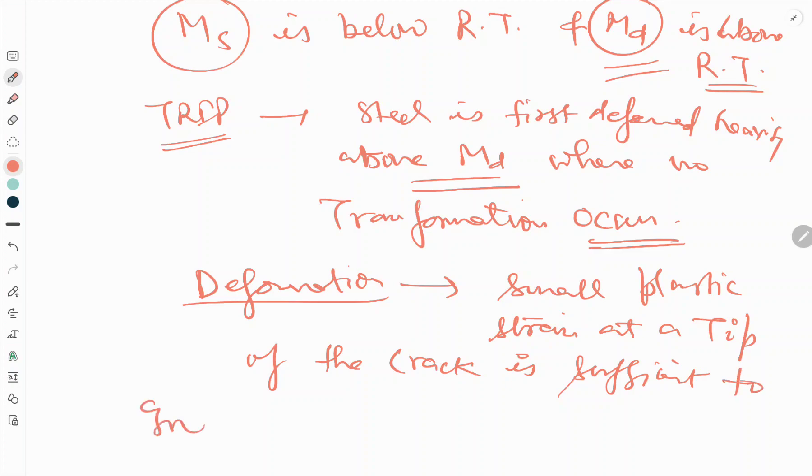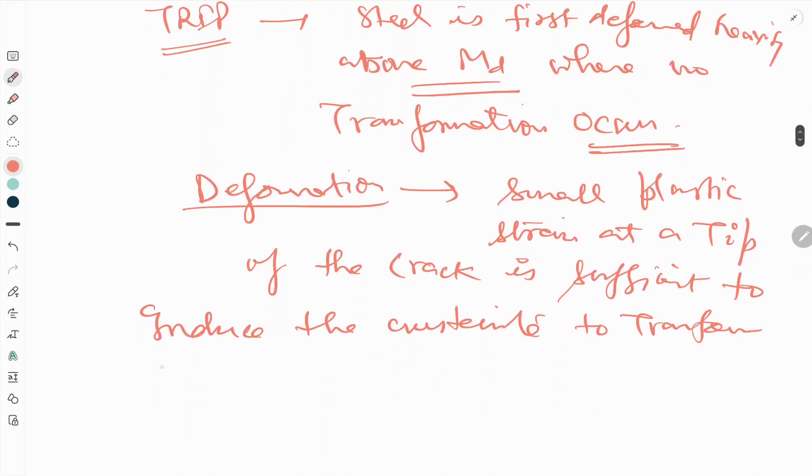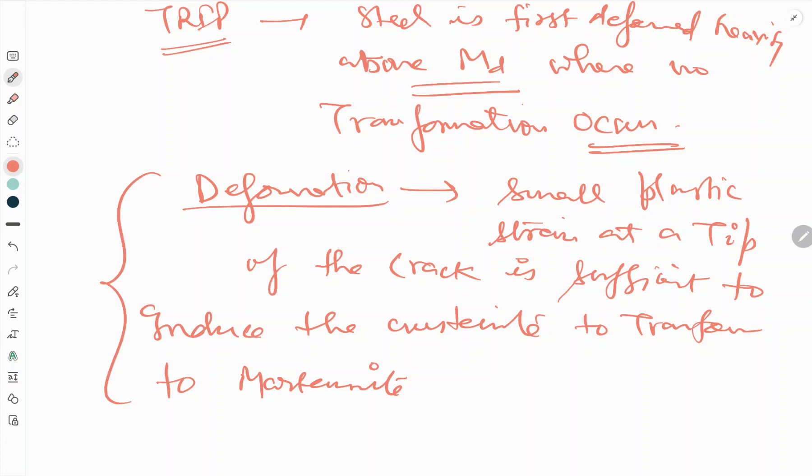to induce the austenite to transform to martensite. So this is the logic behind the transformation induced plasticity.